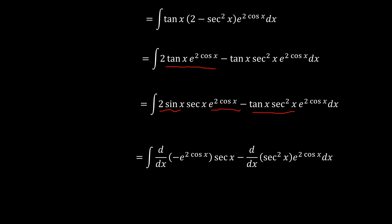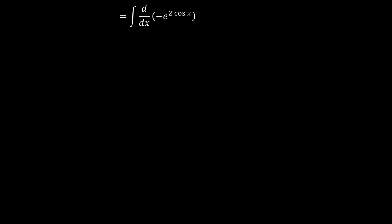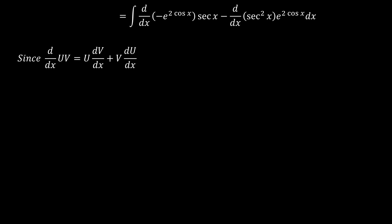One important thing to note is that when you differentiate a product of two functions u and v, that is the same as the sum of u times the derivative of v, and v times the derivative of u. So we can create a scenario whereby we have these two expressions come to be represented as u·v.